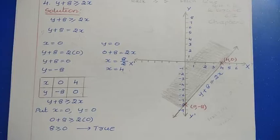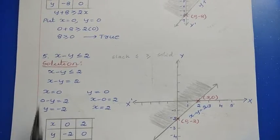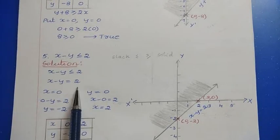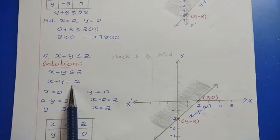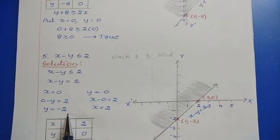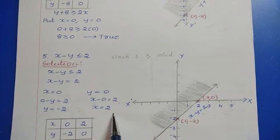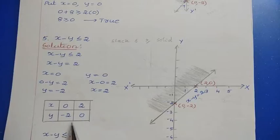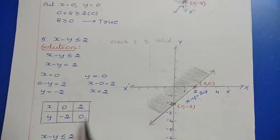Next, problem 5: x minus y less than or equal to 2. The first step is to convert the inequality into an equality: x minus y equals 2. To find the solution, put x equal to 0 to get y equals minus 2, and put y equal to 0 to get x equals 2. So the two points are (0, -2) and (2, 0).